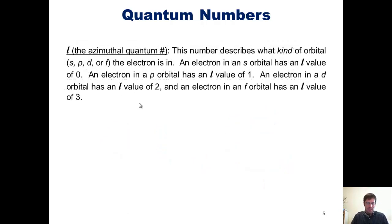The second quantum number is l, called the azimuthal quantum number. This number describes which kind of orbital, s, p, d, or f, the electron occupies. An electron in an s orbital, for example, has an l value of 0. An electron in a p orbital has an l value of 1. An electron in a d orbital has an l value of 2. And an electron in an f orbital has an l value of 3. This is shown in the following table, which I have copied from your book.